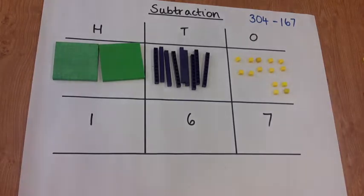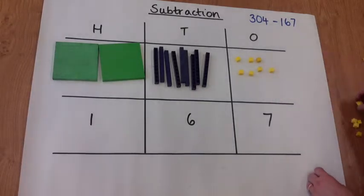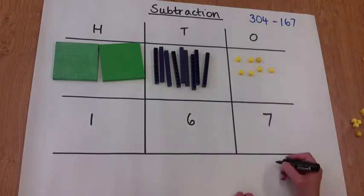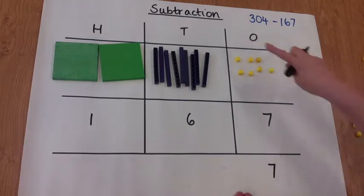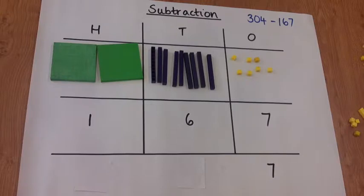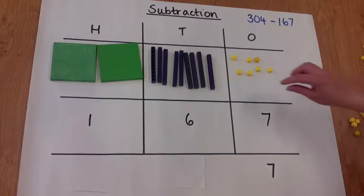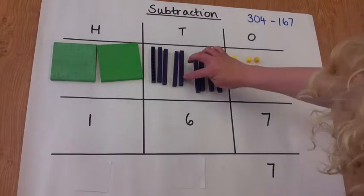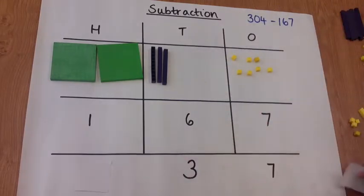So now we have 14 ones in the ones column. We need to subtract the seven, which leaves us with seven. Now on to the tens column. We need to subtract six tens from the tens column, and you can see that that's three.